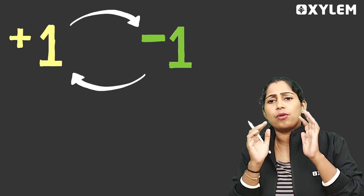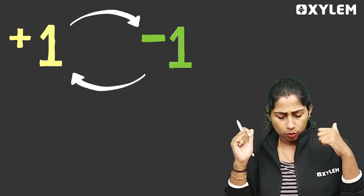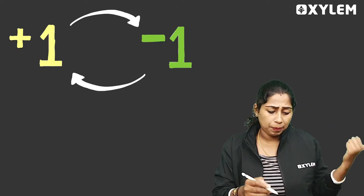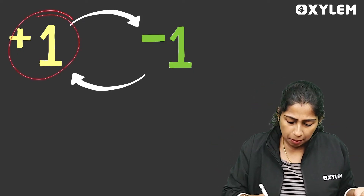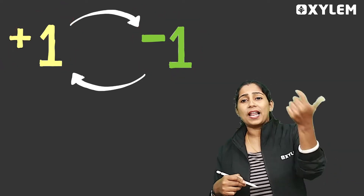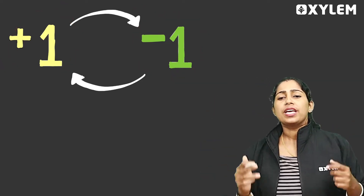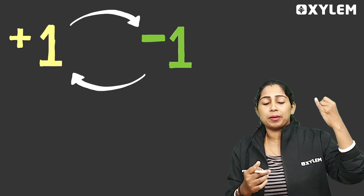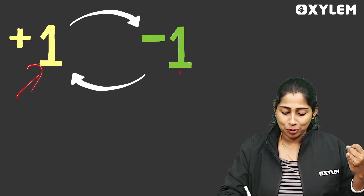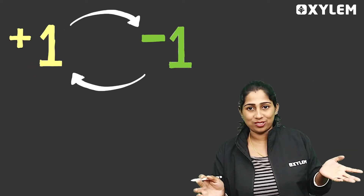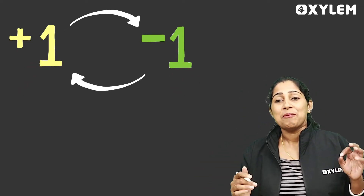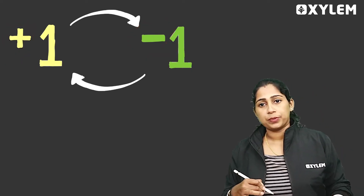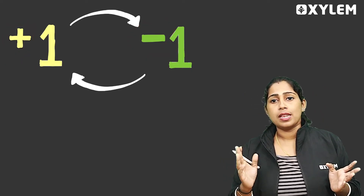I'm going to show you the first one. Okay, we have two: one plus one and one minus one. What are the differences here? You can see one yellow color and one green color — one yellow color is positive and one green color is negative.